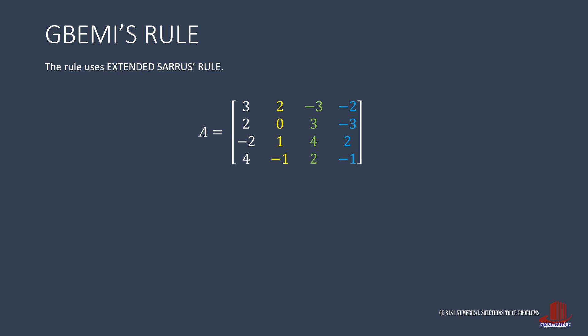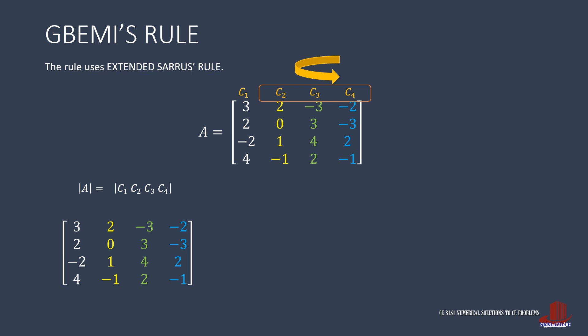Having a 4x4 matrix, just like the matrix example shown, we can identify that there are 4 columns. To easily determine which elements belong to which column, the elements are color-coded, and we call them C1 until C4.